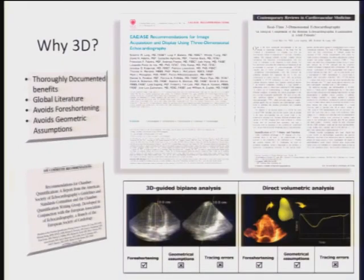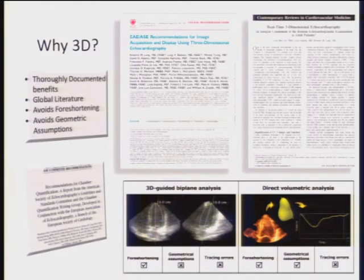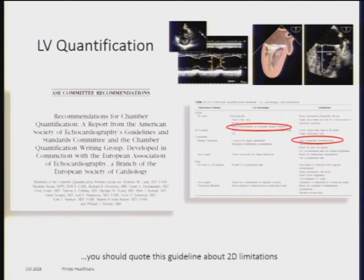Why 3D? If you look at the past years, visit World Congresses, and follow the ASC guidelines, we see that quantification is moving more towards 3D to get correct values. As shown on the slides, 3D avoids foreshortening and avoids geometric assumptions related to 2D. Dr. Tsang from the University of Chicago has published numerous papers on left ventricle quantification. Left ventricle quantification remains most widely used to calculate ejection fraction, but it is most representative for normal hearts in 2D, and the disadvantage is the possible foreshortening of the apex.